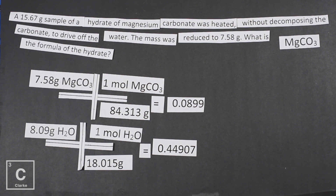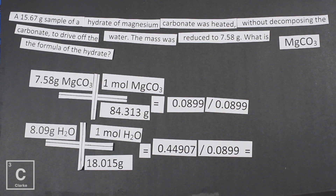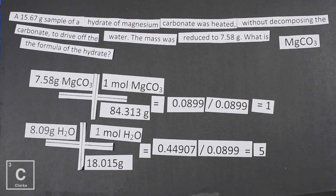Now we need to divide by small. Divide by small means compare our two answers; whichever one's smaller, divide by that one. The anhydrate should always be the smallest one — always — because we're trying to figure out how many moles of water is attached to our ionic compound. So one of these is always going to be one. You should get a whole number for the other; if you don't, go back and recalculate your molar mass. We have a one-to-five ratio: for every one anhydrate, we're going to have five moles of water attached.